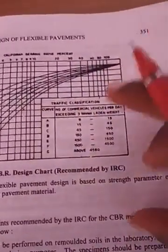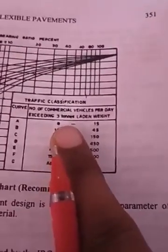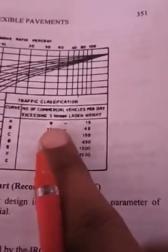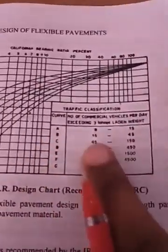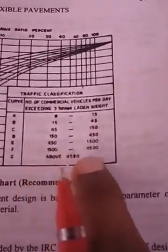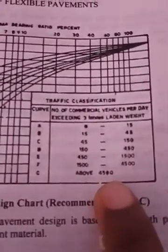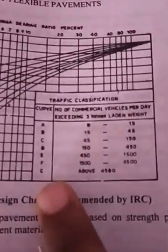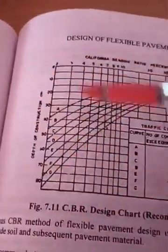These alphabets indicate the number of commercial vehicles per day exceeding three tons load capacity. We simply call it CVPD — commercial vehicles per day. If the CVPD is between 0 to 15, you refer to curve A. If CVPD is 15 to 45, refer to curve B. Similarly, if CVPD is between 1500 to 4500, you refer to curve G. Depending on the CBR and traffic value, you directly get the thickness of the pavement using the IRC chart.